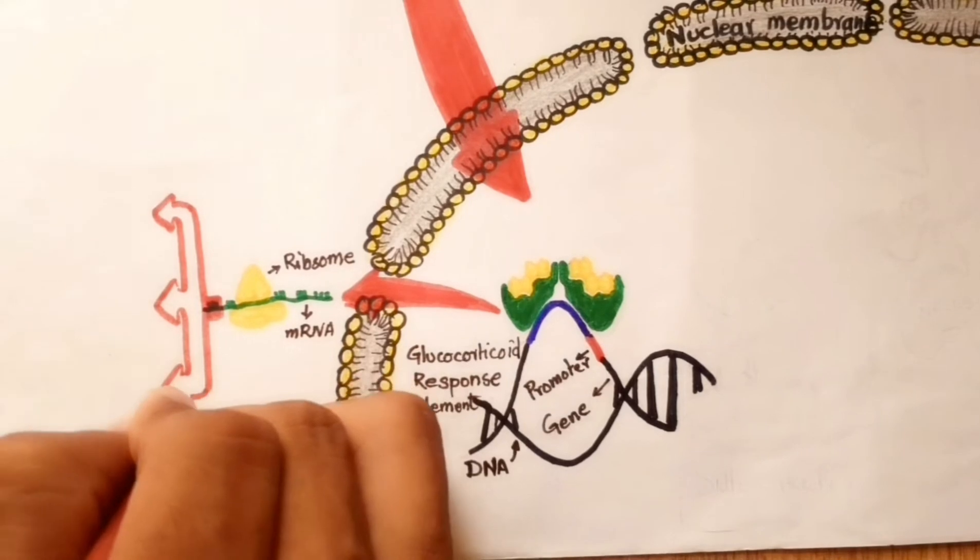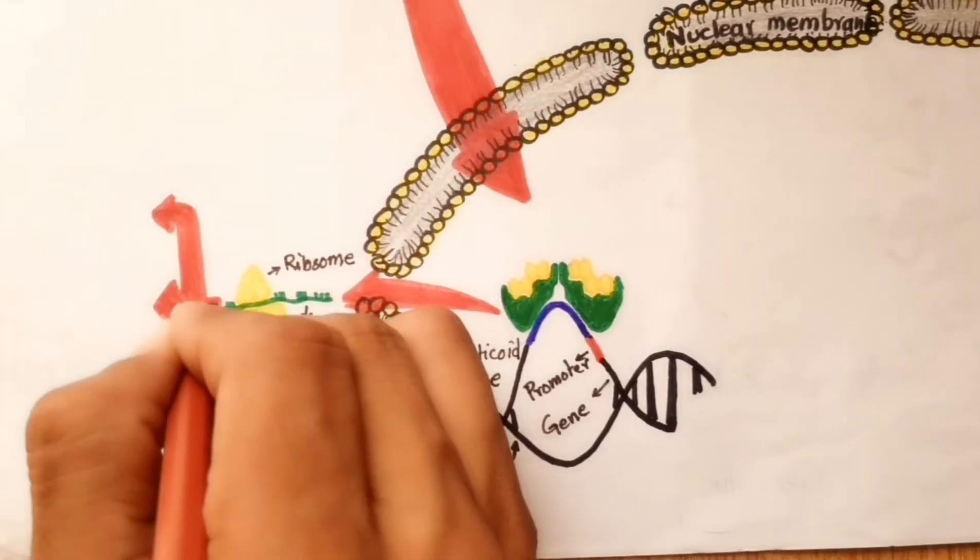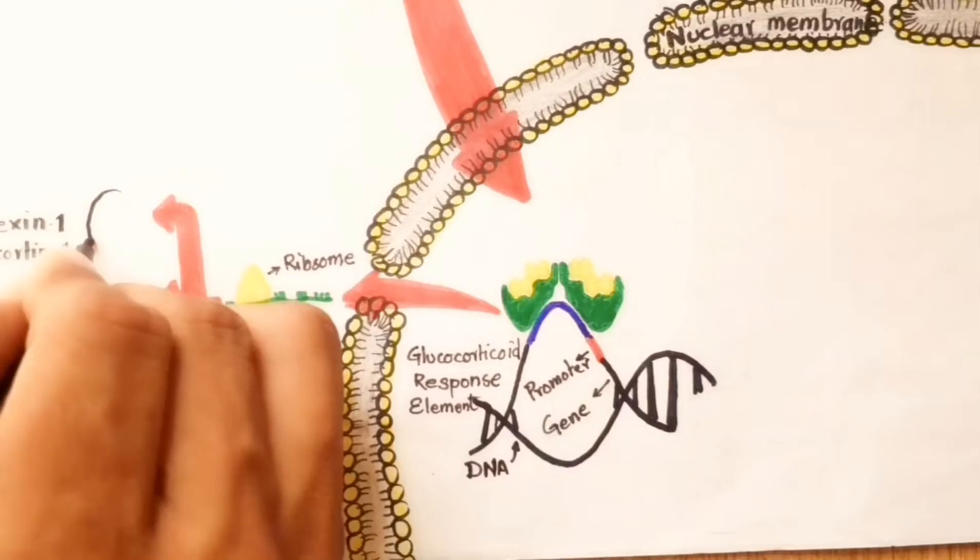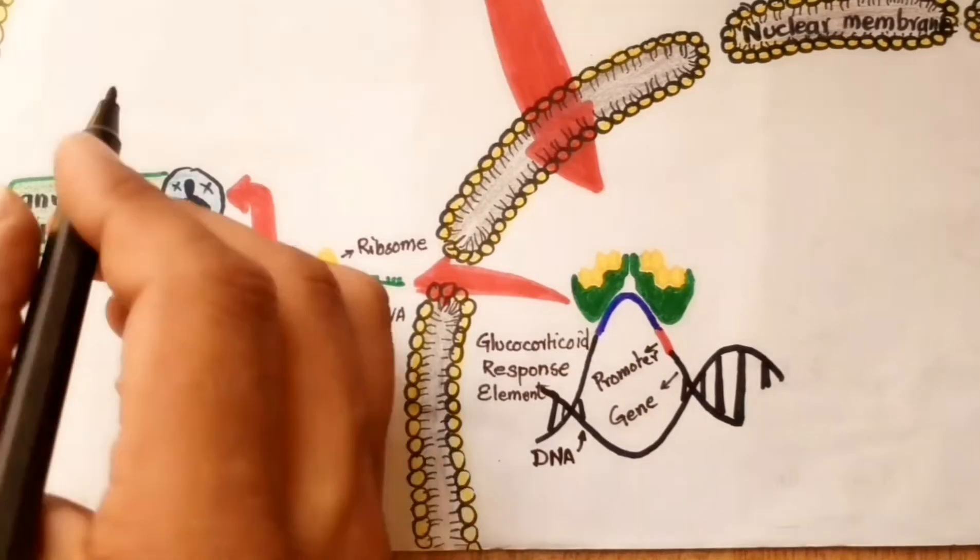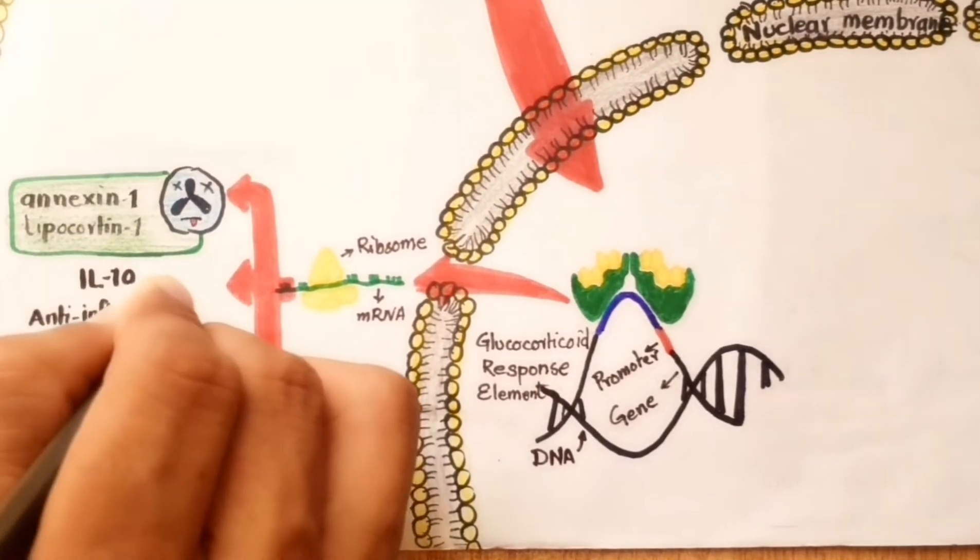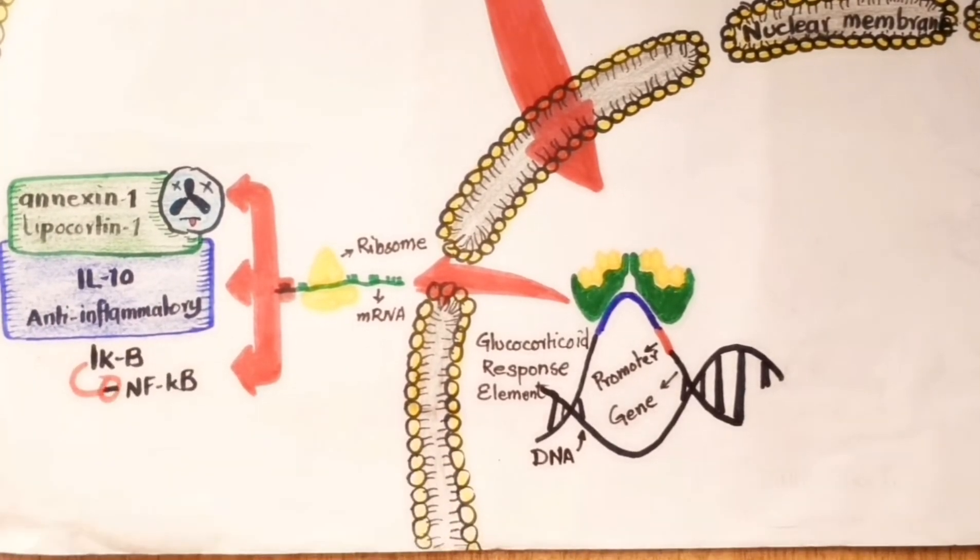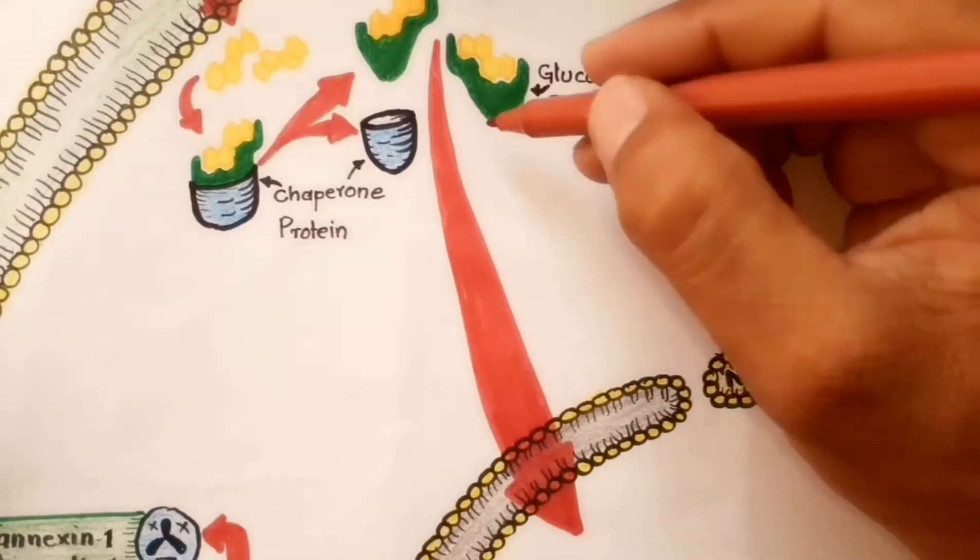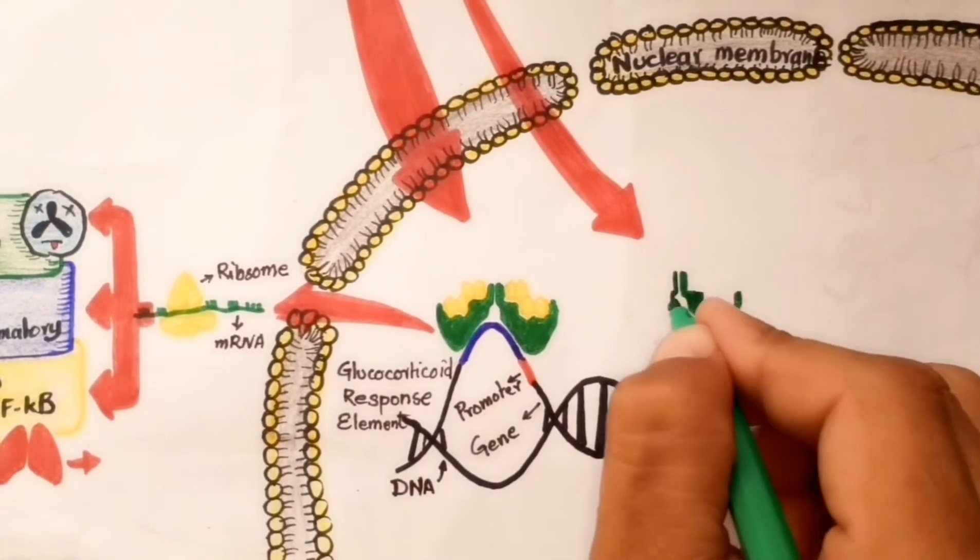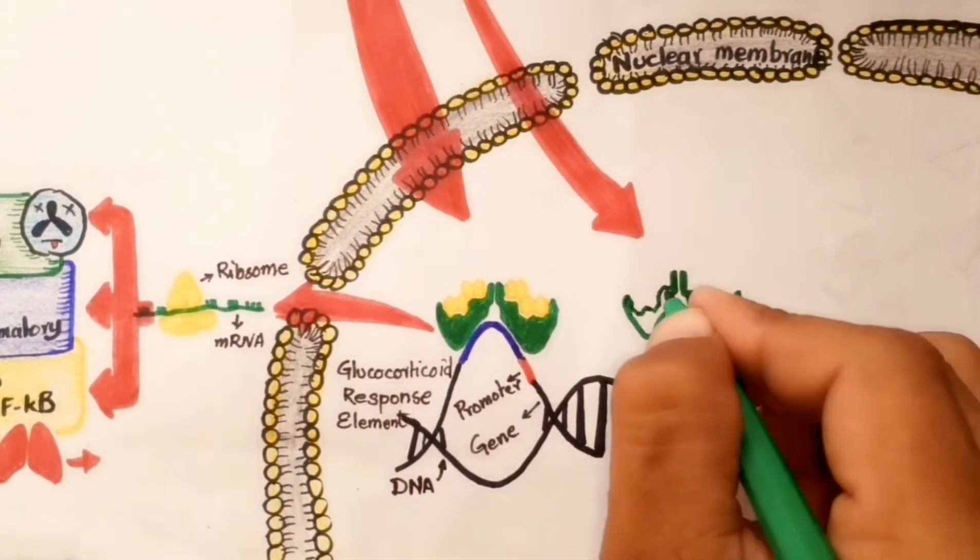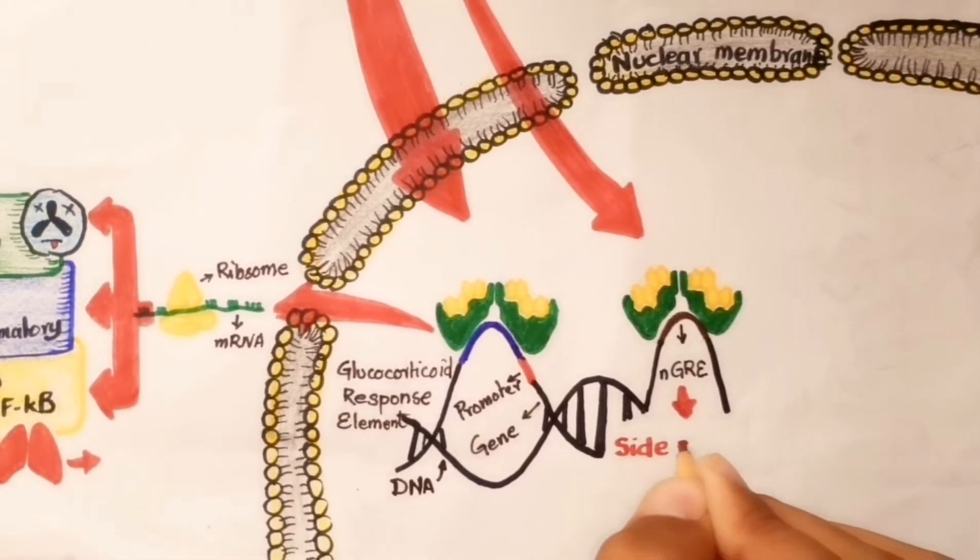This mRNA may encode anti-inflammatory proteins affecting inflammation at different stages, for example: annexin-1 or lipocortin-1, which promotes neutrophil detachment and apoptosis; interleukin-10 with anti-inflammatory activity; and inhibitor of nuclear factor kappa B. Less commonly, GR homodimers interact with negative glucocorticoid response elements to suppress genes, particularly those linked with side effects of corticosteroids.